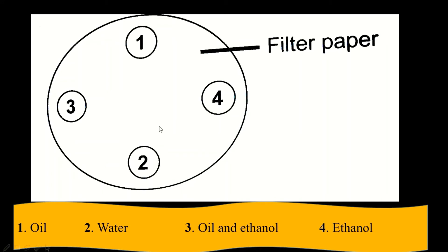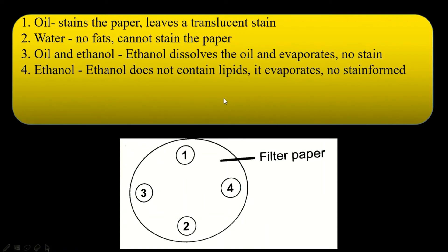I'm sure you have seen this in question papers — this is how you answer such questions. You should be able to reason: why there's a spot, why there's no spot, and so forth. Repeating our results: at spot number one where there's oil, we know that oil will stain the paper and leave a translucent stain, as shown in our picture.